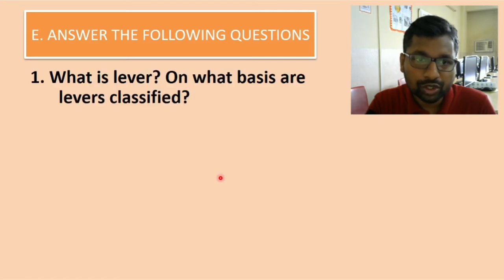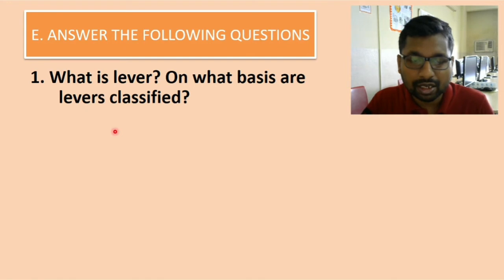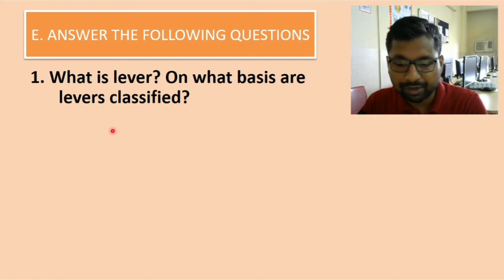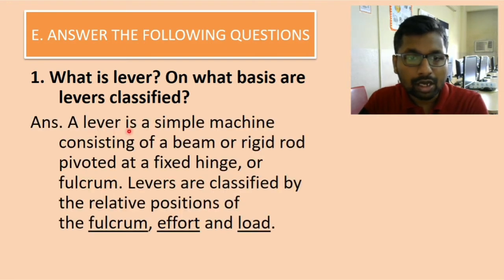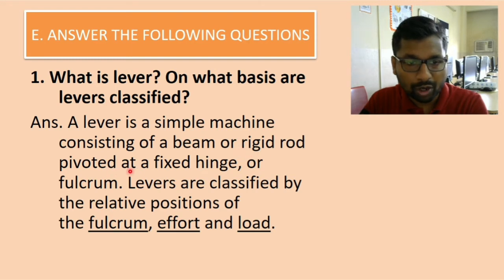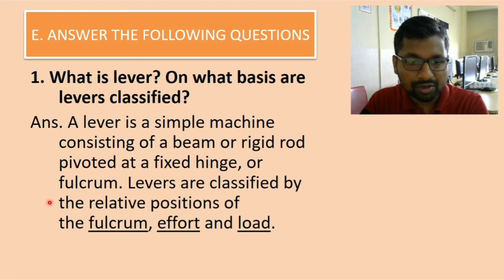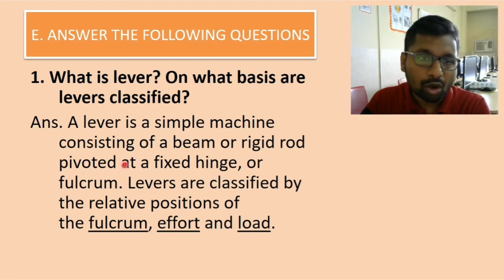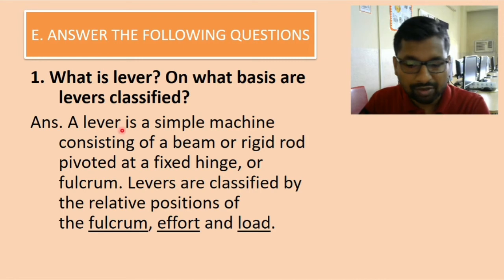Now comes long answers. First question: what is a lever and on what basis are levers classified? A lever is a simple machine consisting of a beam or rigid rod pivoted at a fixed hinge or fulcrum. Levers are classified by the relative position of the fulcrum, effort, and load.